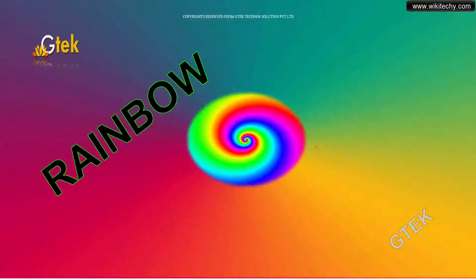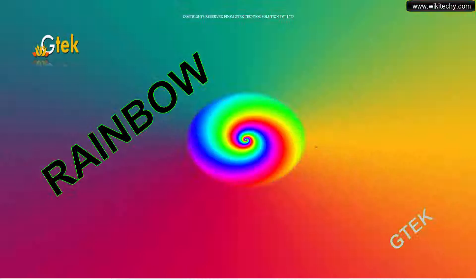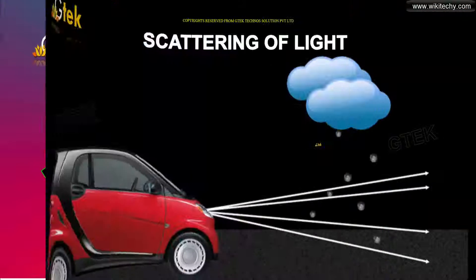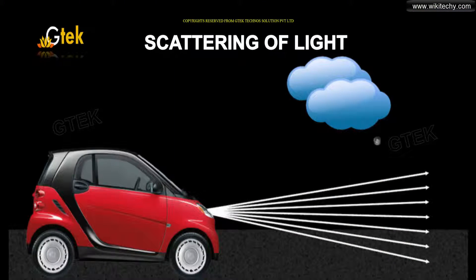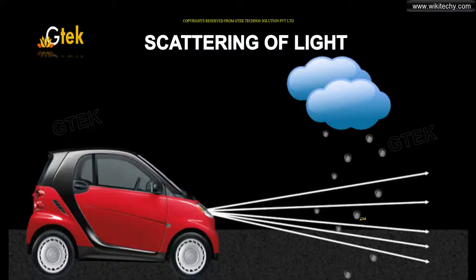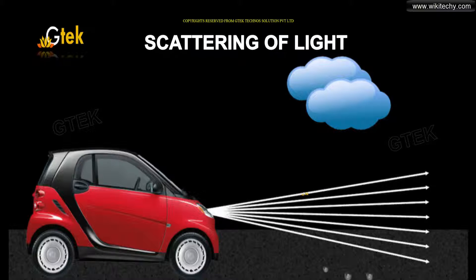So, rainbow — it has multiple colors. Let's see what it is. And this is how the scattering of light works. We are going to look into this further.